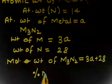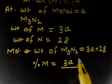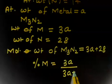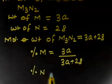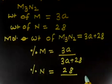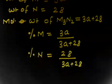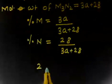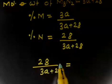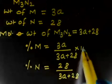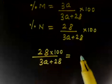The percentage of metal is 3A divided by (3A + 28), multiplied by 100. Similarly, the percentage of nitrogen is 28 divided by (3A + 28), multiplied by 100. The question says the percentage of nitrogen is 28%, so we equate: 28/(3A + 28) × 100 = 28%.